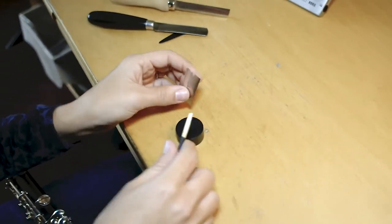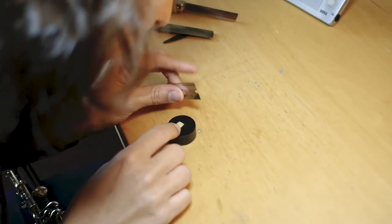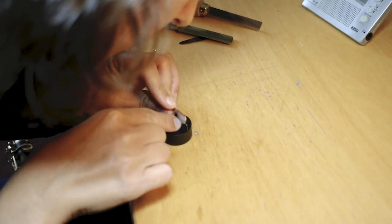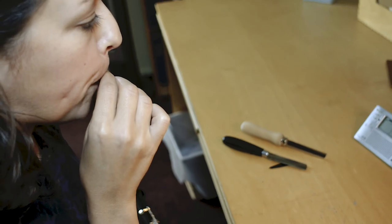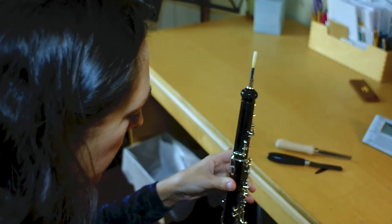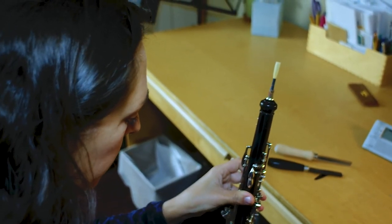So the things I'm looking for when I'm adjusting reeds are response, which is how easily the reed actually plays when you try to start playing it. Intonation. Stability. Stability is that it doesn't bend pitch too easily.